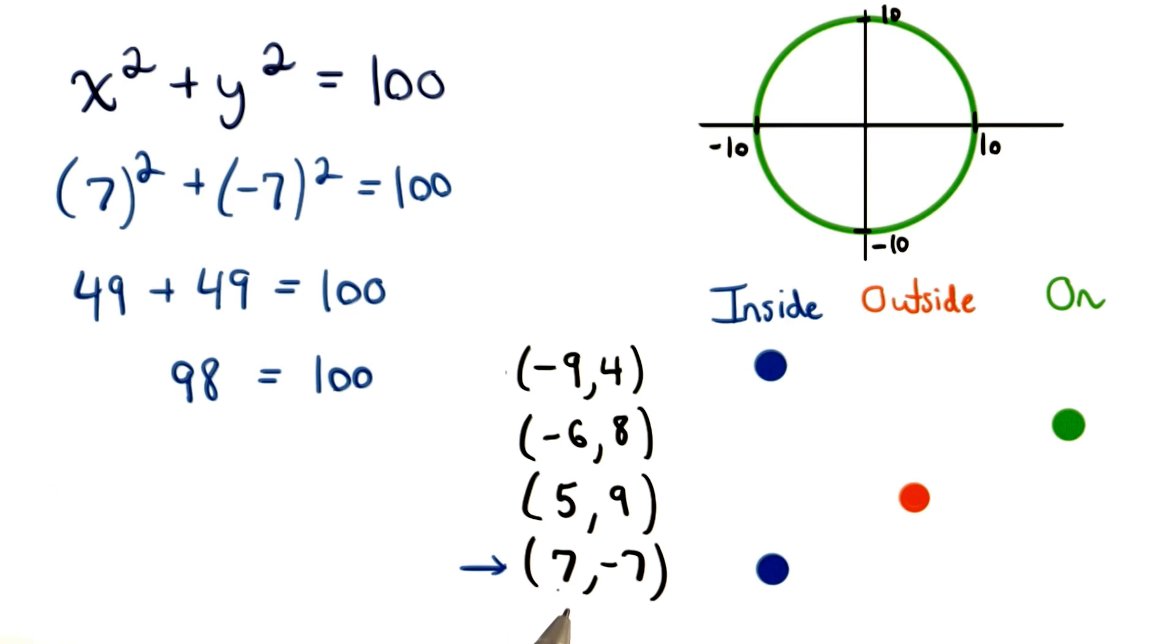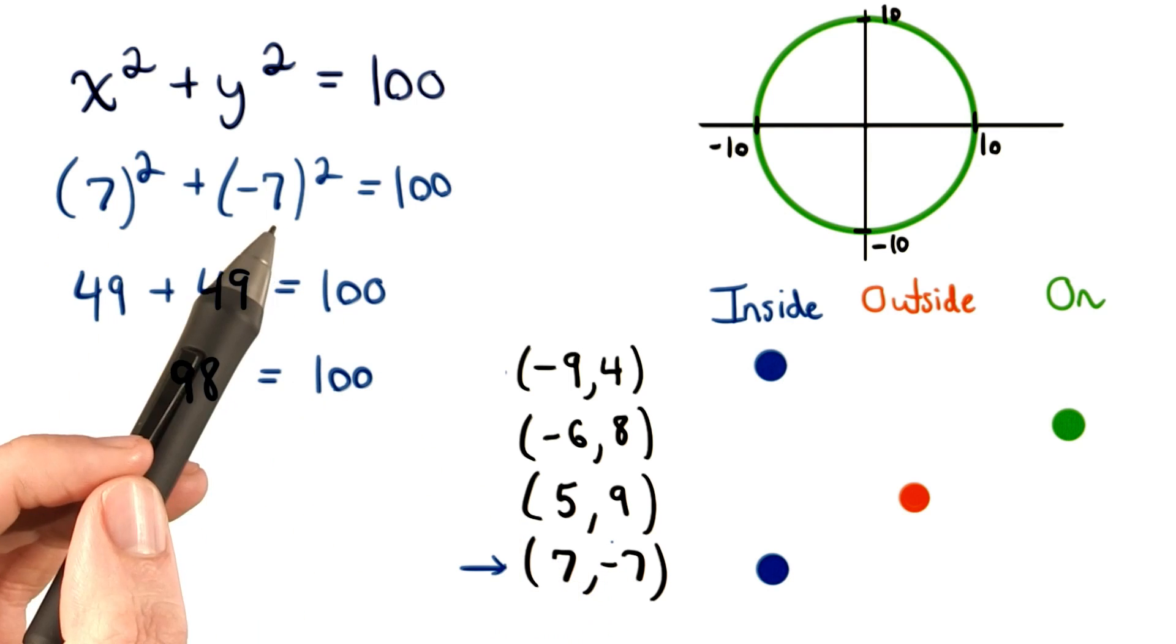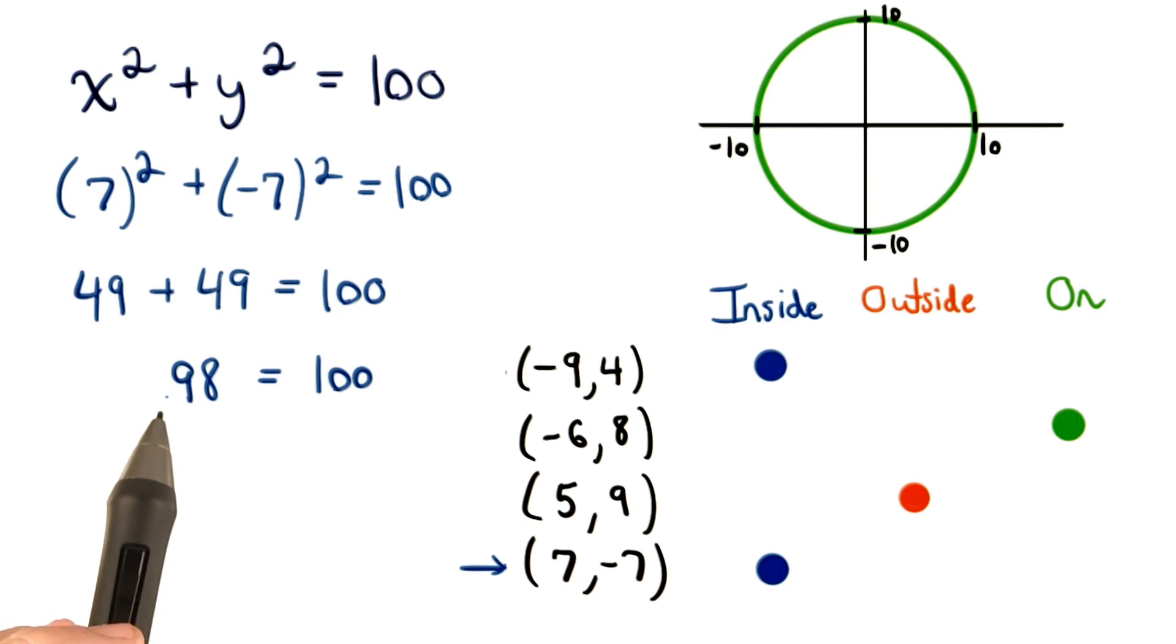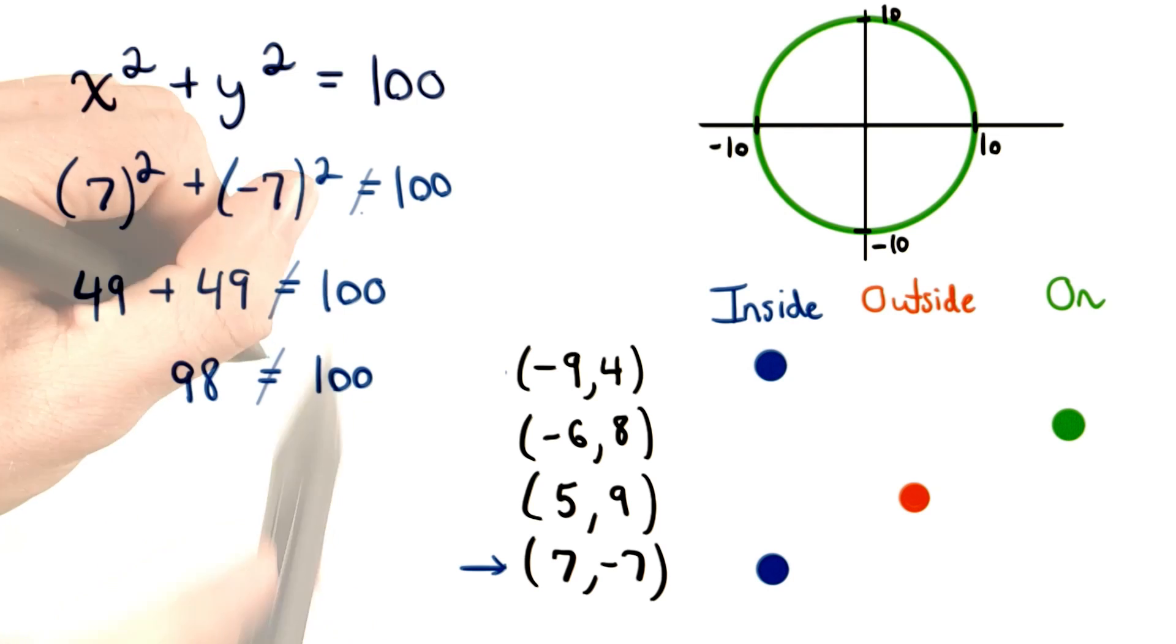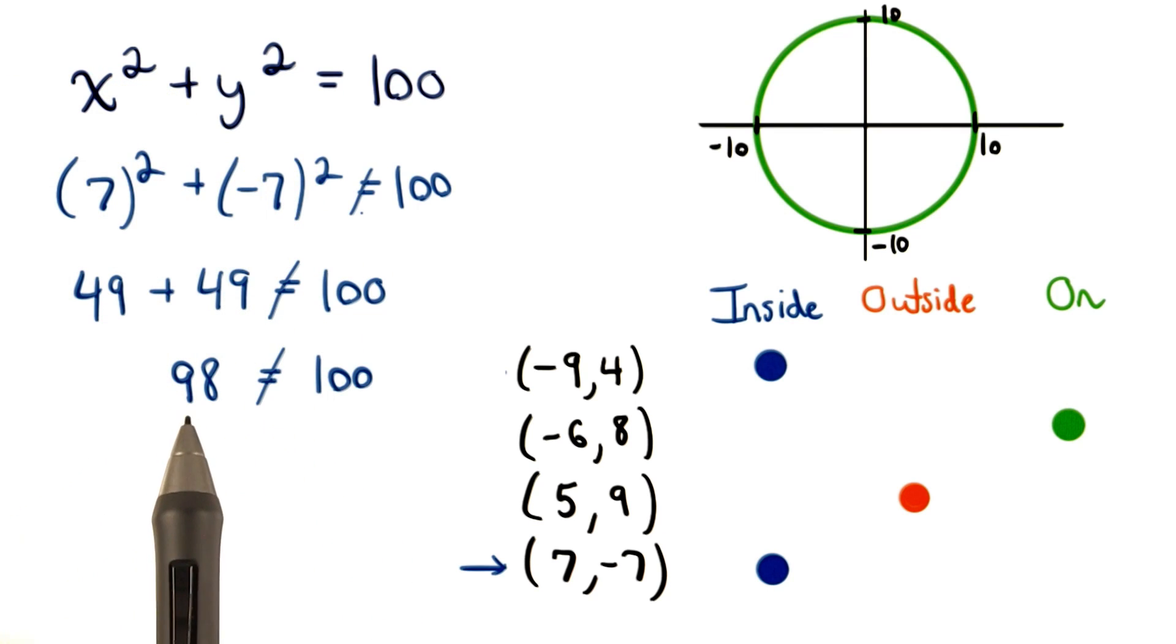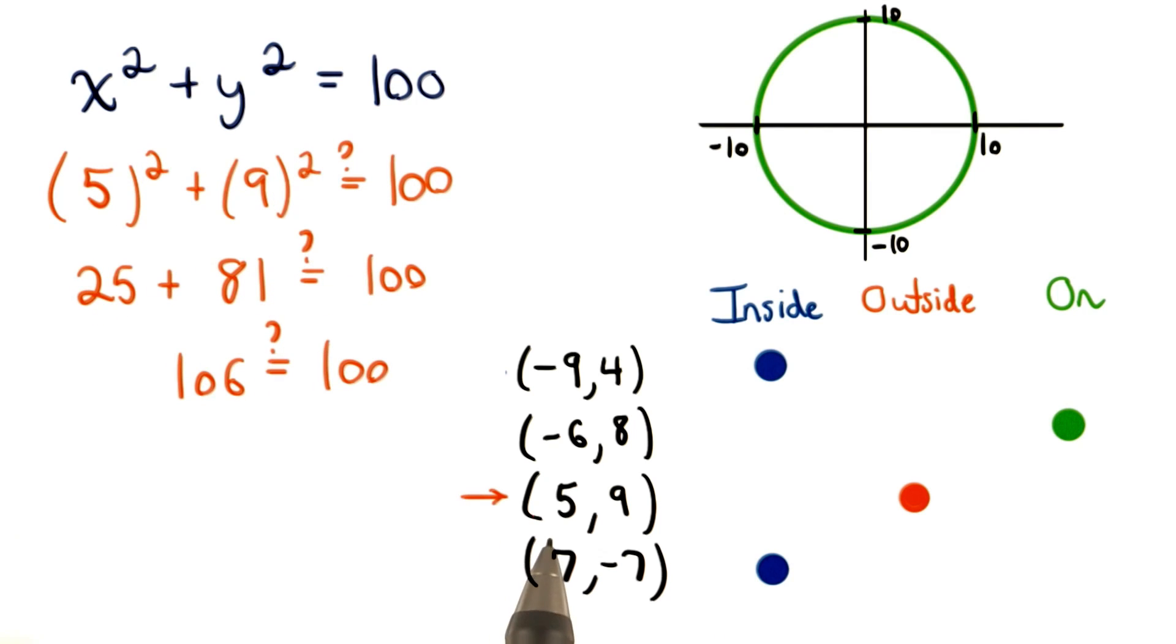The same would be true for the point (7, -7). If we plug in x with the value of 7 and y with the value of negative 7, we'll get the statement 98 equals 100. This isn't true, so we know that the distance from the origin to this point is less than 10. So, this point must be inside.